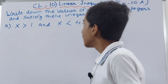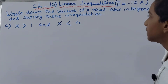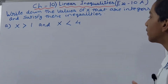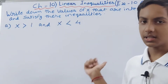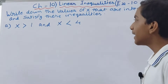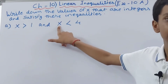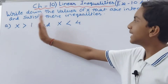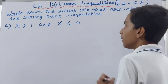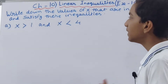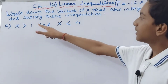The question asks us to write down the values of x that are integers and satisfy the given inequalities. Some inequalities are given to us and we have to write down the value of x that satisfies them. The first inequality is: x is greater than 1 and x is less than 4.